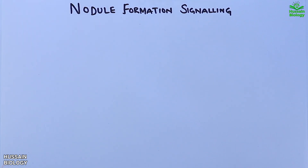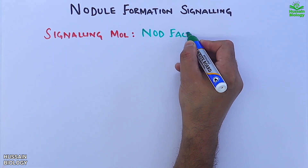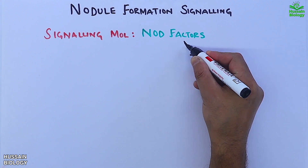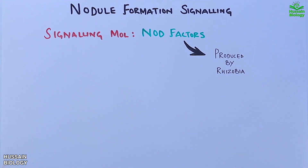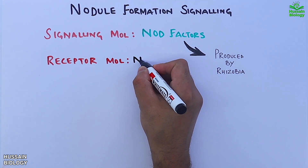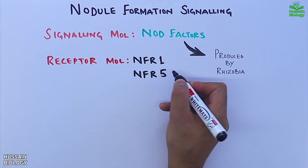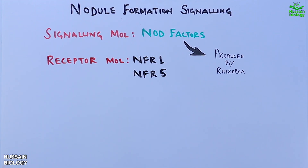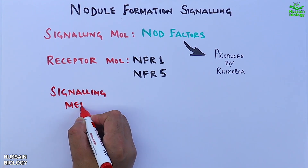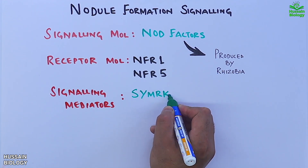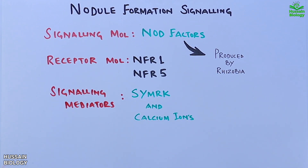In this signaling pathway, the signaling molecules are Nod factors, which are produced by rhizobia. The receptor molecules are NFR1 and NFR5, and the signaling mediators are SYMRK and calcium ions. These are the basic signaling proteins and molecules we are going to deal with.